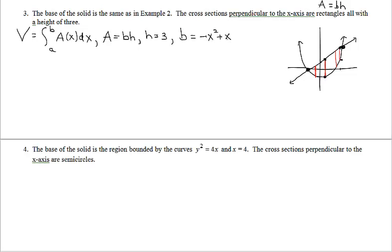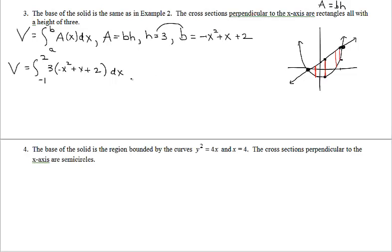The base of the rectangle is the linear function minus the quadratic, which we found previously: B = −x² + x + 2. Volume equals the integral from negative 1 to 2 of A(x) dx. Since the height is 3, we multiply: 3 times (−x² + x + 2) dx. The integral is set up and we're ready to proceed. You can take the 3 out front, find the antiderivative, evaluate at the limits, and you have your answer.